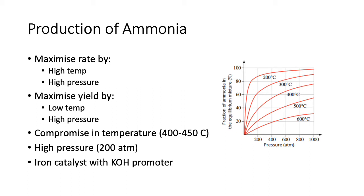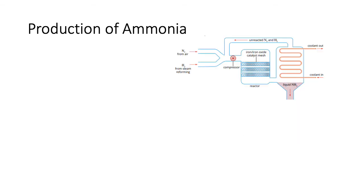Looking at a table of temperatures, relative yields, and pressures: a high temperature gives a low yield. So even though you get a high rate, you get a low yield, which is not that useful. As you increase pressure, the yield goes up — that's what this diagram is showing.